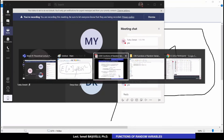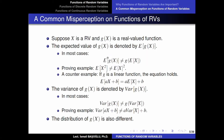So for a function of a random variable, the expected value of a function of a random variable is not equal to the function of that expectation. However, there are counter-examples. For some functions this equality holds — for example, linear functions. If g is a linear function, the expected value of aX plus b equals a times the expected value of X plus b. So for linear functions this may be true, but for other functions it may not.